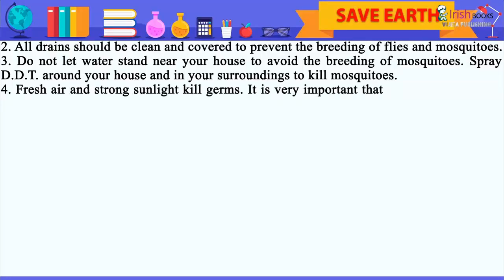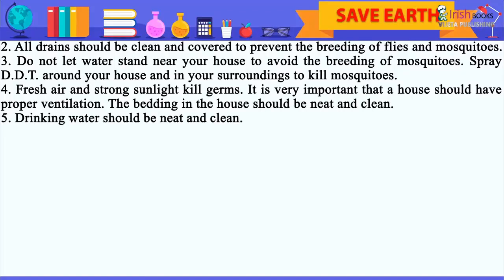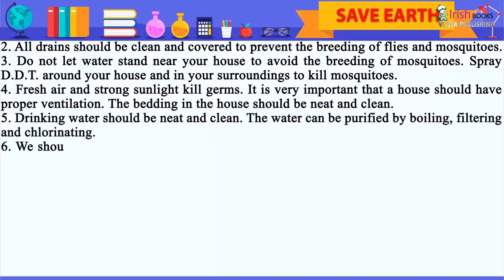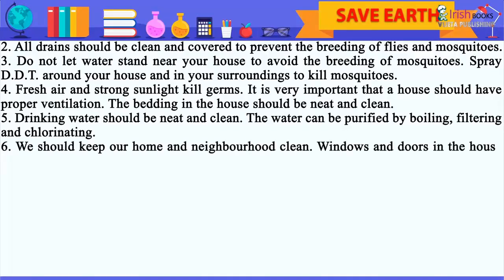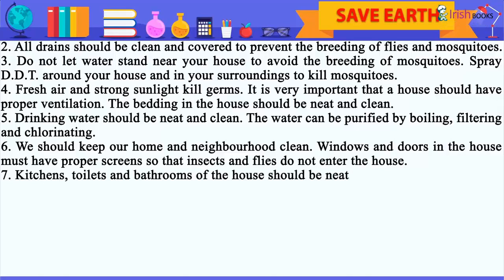4. Fresh air and strong sunlight kill germs. It is very important that a house should have proper ventilation. The bedding in the house should be neat and clean. 5. Drinking water should be neat and clean. The water can be purified by boiling, filtering and chlorinating. 6. We should keep our home and neighborhood clean. Windows and doors in the house must have proper screens so that insects and flies do not enter the house. 7. Kitchens, toilets and bathrooms of the house should be neat and clean.